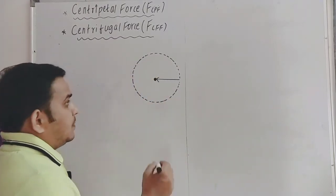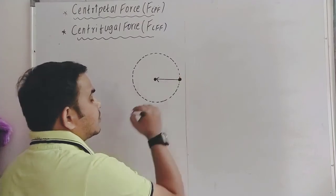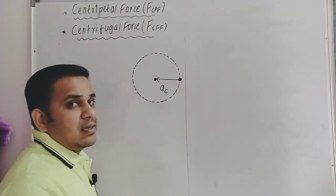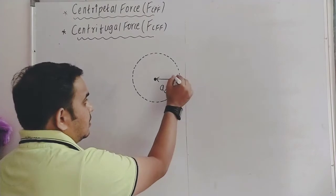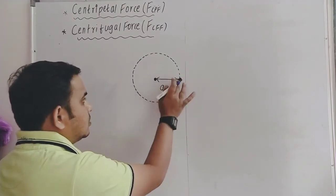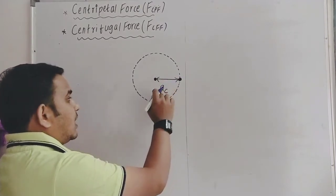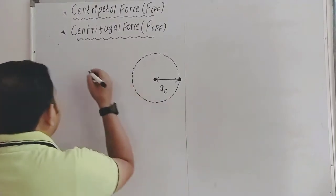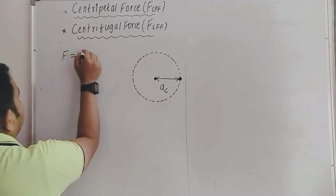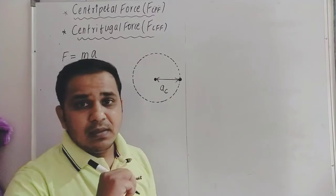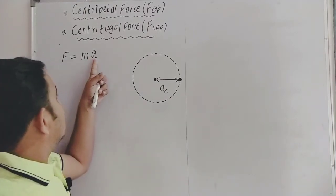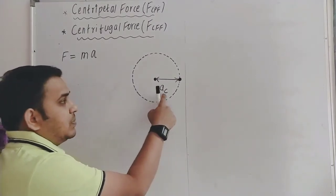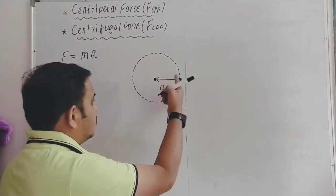Consider a particle which is performing circular motion. It has a radial or centripetal acceleration which is along the radius and directed towards the center. According to Newton's second law of motion, F equals mass into acceleration. Acceleration is produced by force, so this centripetal acceleration is definitely due to some force.